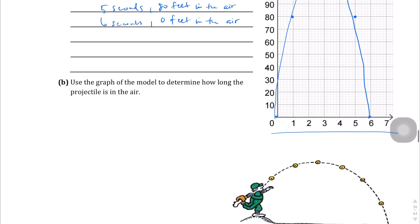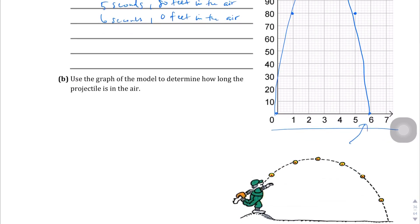Use the graph of the model to determine how long the projectile is in the air. Well, it hits the ground at 6 seconds. So the projectile is in the air for 6 seconds.